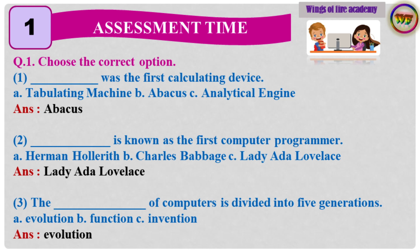2. Dash is known as the first computer programmer. A. Herman Hollerith. B. Charles Babbage. C. Lady Ada Lovelace. Answer: Lady Ada Lovelace. 3. The dash of computers is divided into 5 generations. A. Evolution. B. Function. C. Invention. Answer: Evolution.